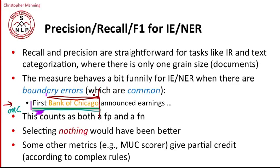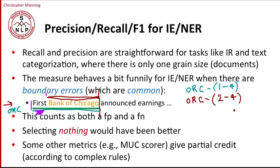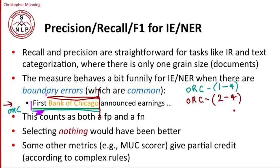The true annotation is that there's an organization spanning from token one through token four of the text, whereas our system guessed an organization spanning from token two through token four. Each of these claims is taken as a unit and put into a set of claims. We count the number of matching claims — that's the true positives — and then count the set differences in both directions, giving us the false positives and the false negatives. So what we end up with is a false negative and a false positive, meaning our system will be scored as having made two errors.